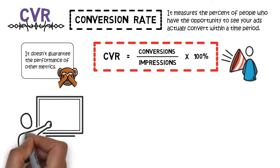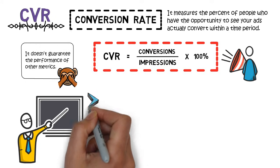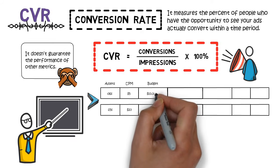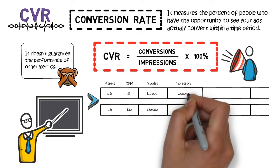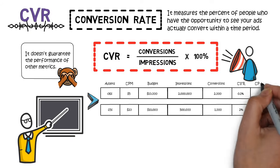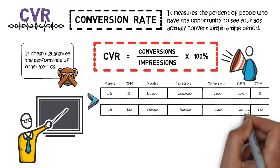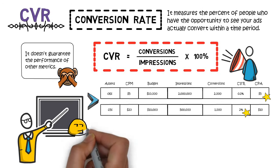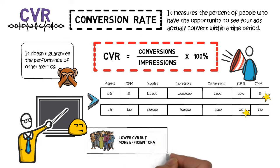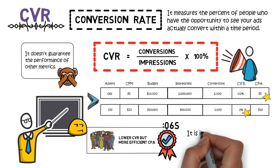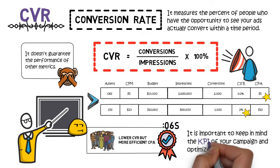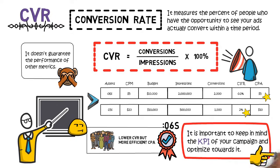For example, we are running a campaign with two assets: one 6-second video and one 15-second video. The 6-second video has a really low CPM at $5, and the 15-second video has a higher CPM at $20. At the same budget level, we can see that the 15-second video drove fewer impressions, which could potentially lead to a higher conversion rate but also a higher CPA. The 6-second video is so cheap that we can reach a lot more people — even though the CVR might be lower, we can still drive more conversions than the 15-second video. At the end of the day, it's really important to keep in mind your KPI and optimize towards it. Other metrics can tell you useful information, but you should always optimize towards your KPI.